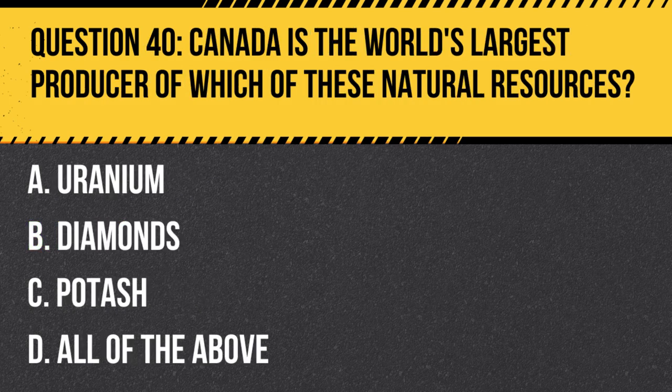Question 40. Canada is the world's largest producer of which of these natural resources? A. Uranium. B. Diamonds. C. Potash. D. All of the above.